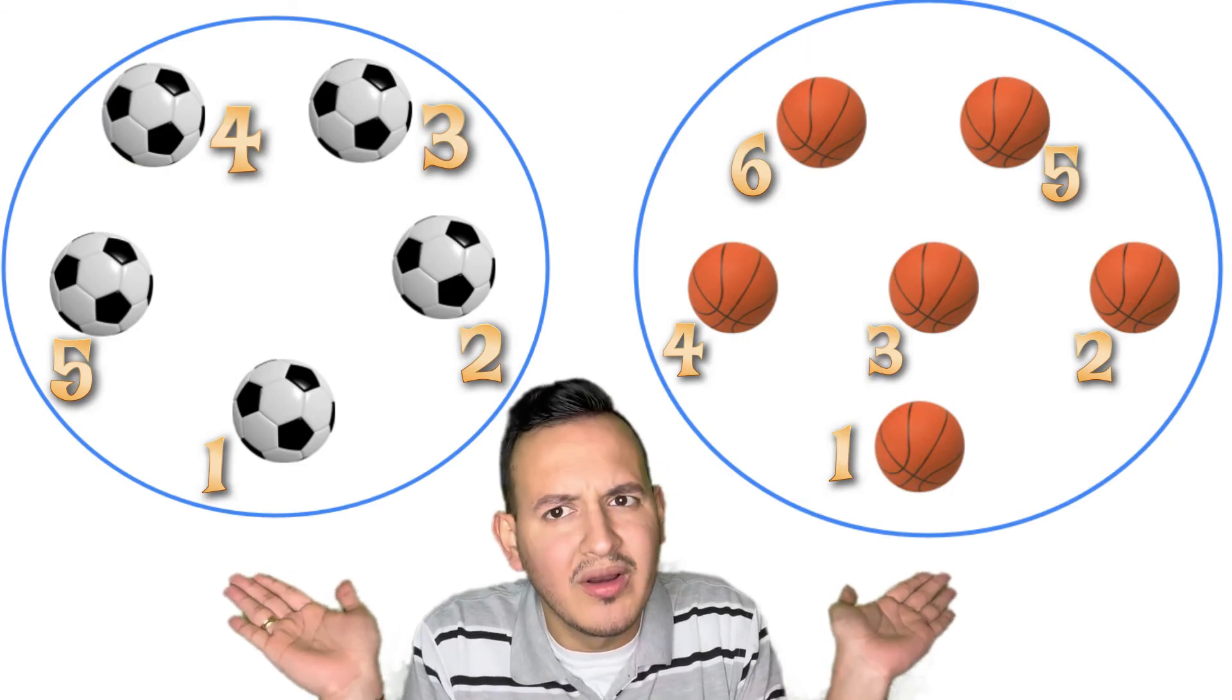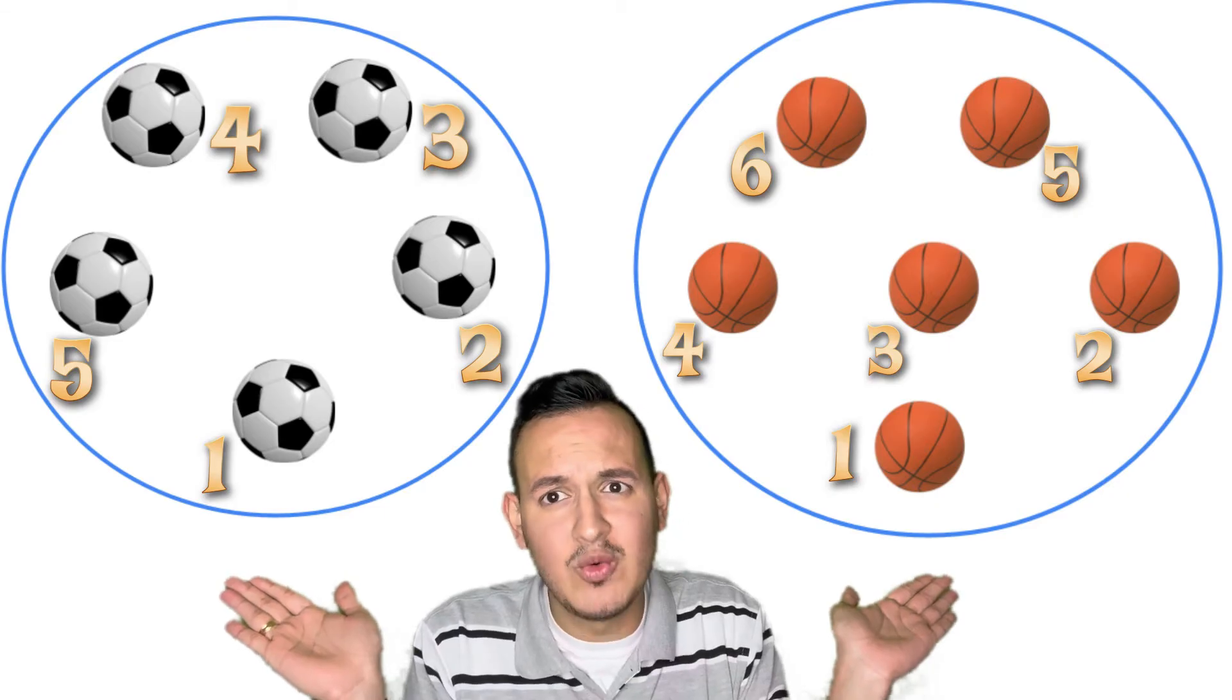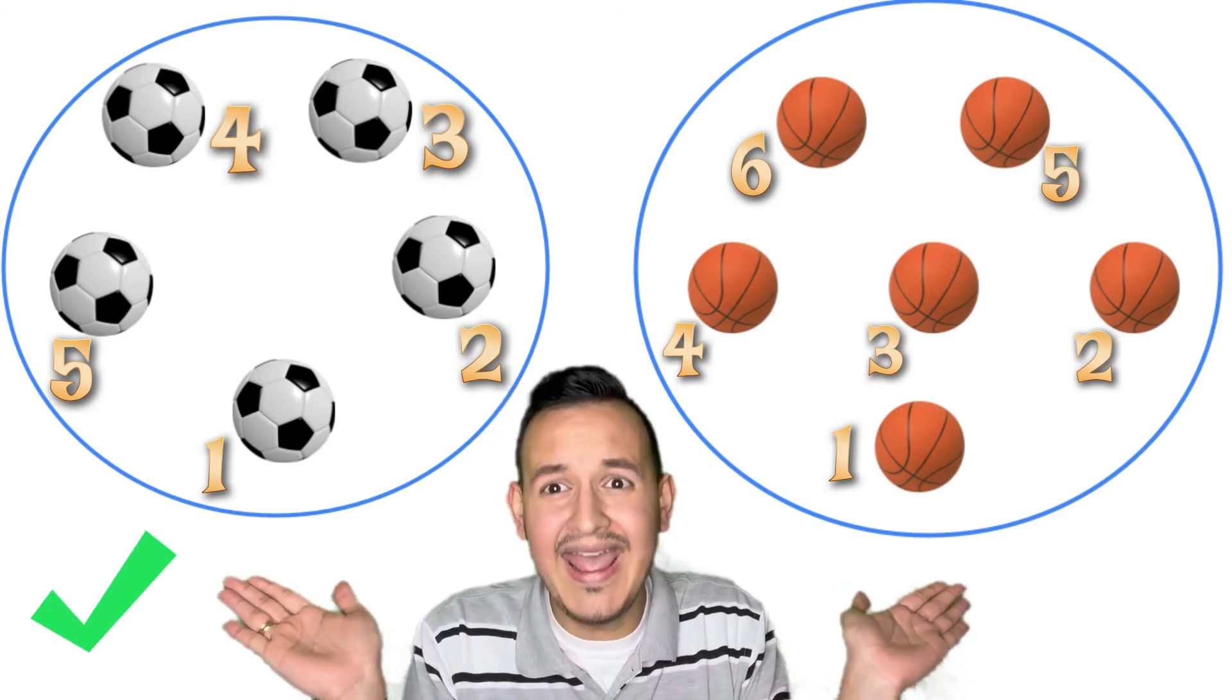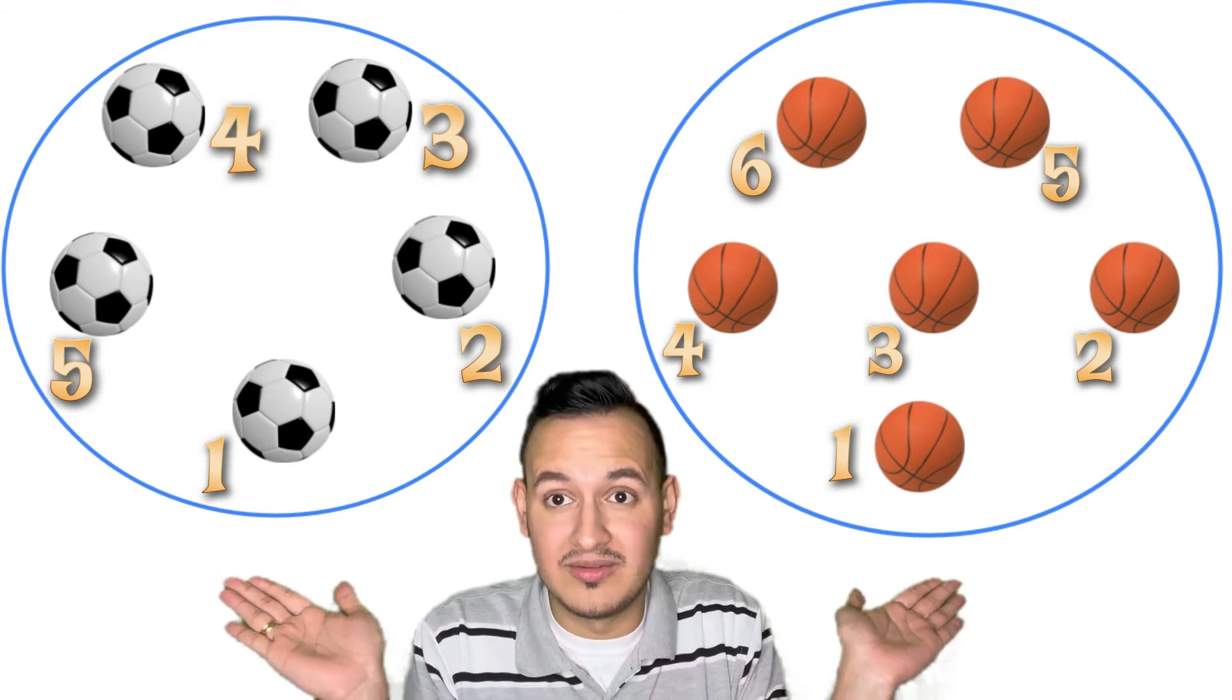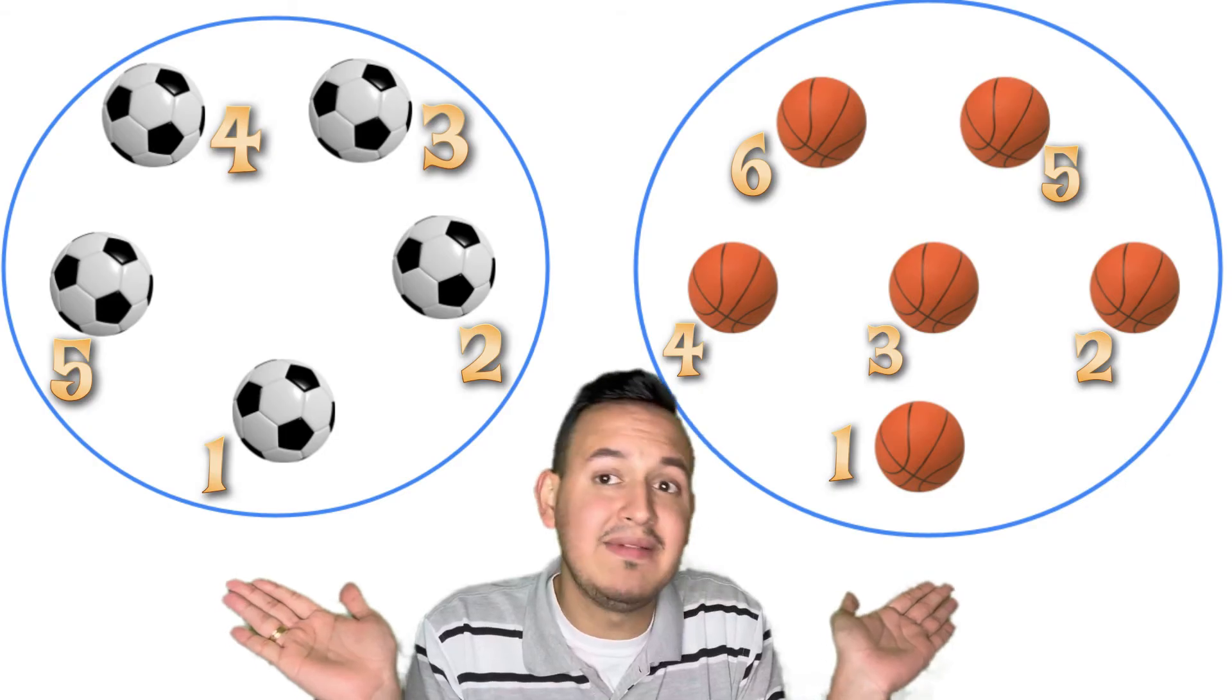Which group has more? Yes, more basketballs. And which group has less? Yes, less soccer balls. Very good. Yes, because six is more than five and five is less than six. Very good, my friend.